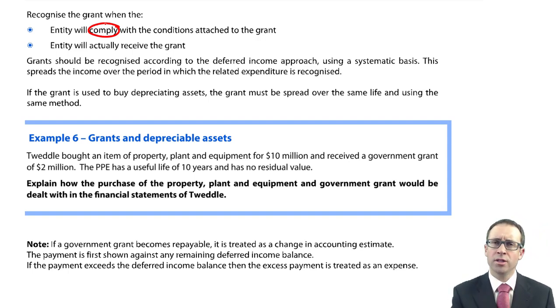So if it is there for the purchase of an item of property, plant and equipment, you have to make sure that you have agreed to buy the PPE as part of the conditions of the grant.